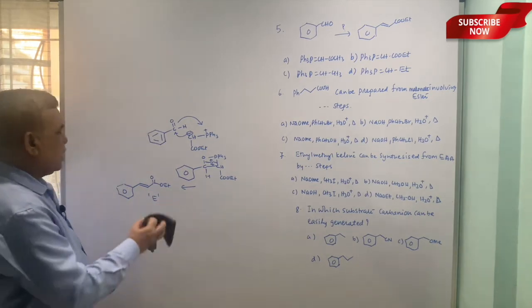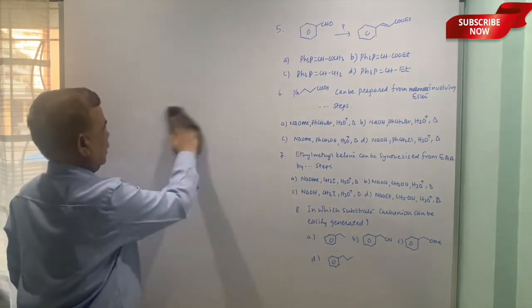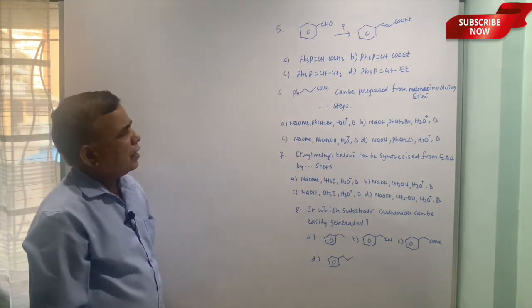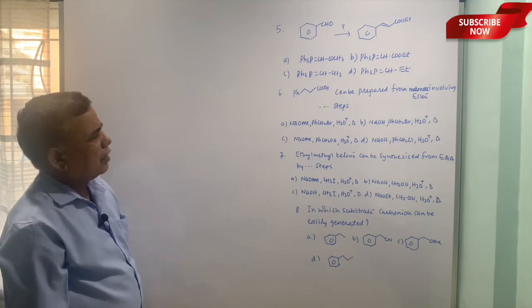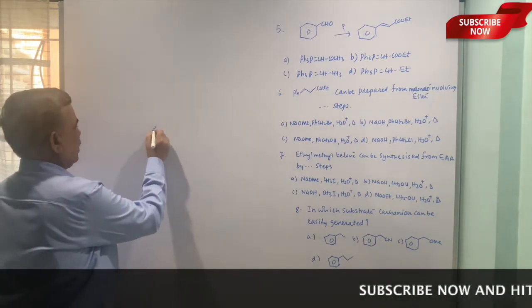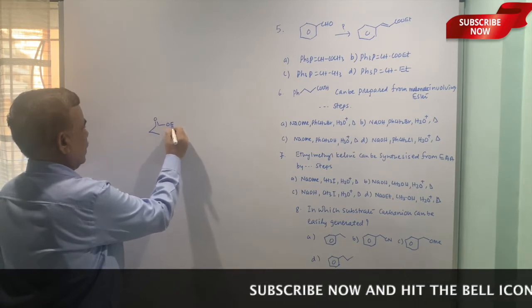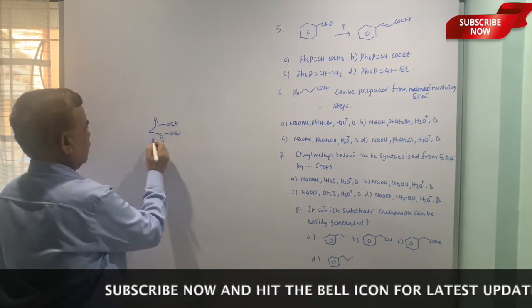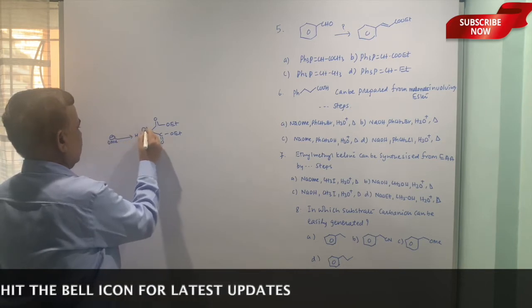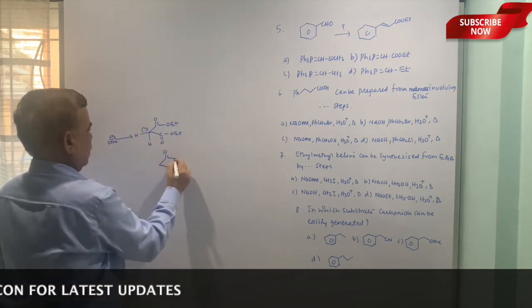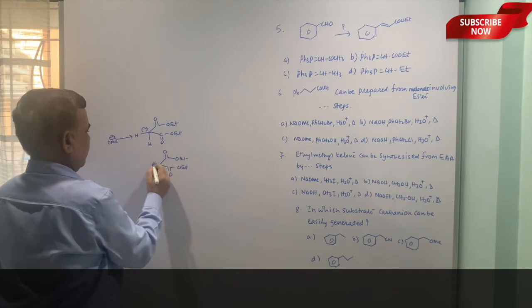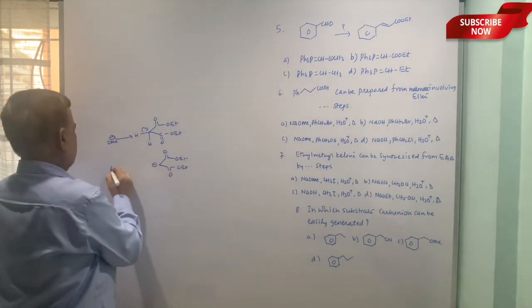The next example is this acid can be prepared from malonate ester involving steps. Now four options are given. For example, I'll just put malonate ester first of all: COOEt, COOEt. The methylene protons are there. OMe can abstract this. You get the carbanion. Now this carbanion is stabilized because it can enjoy the stabilization by virtue of resonance effect.